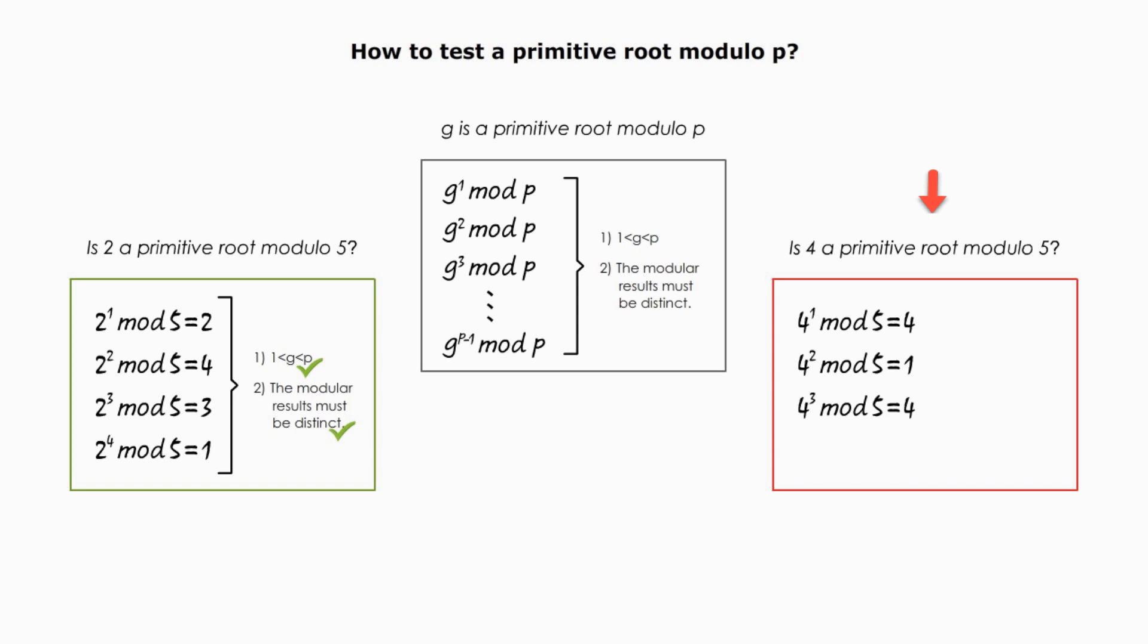At this point, we can see there's two duplicate results, 4. If we continue, 4 to the fourth power is 256, and 256 modulo 5 is 1. Again, the result is the same as the second one.